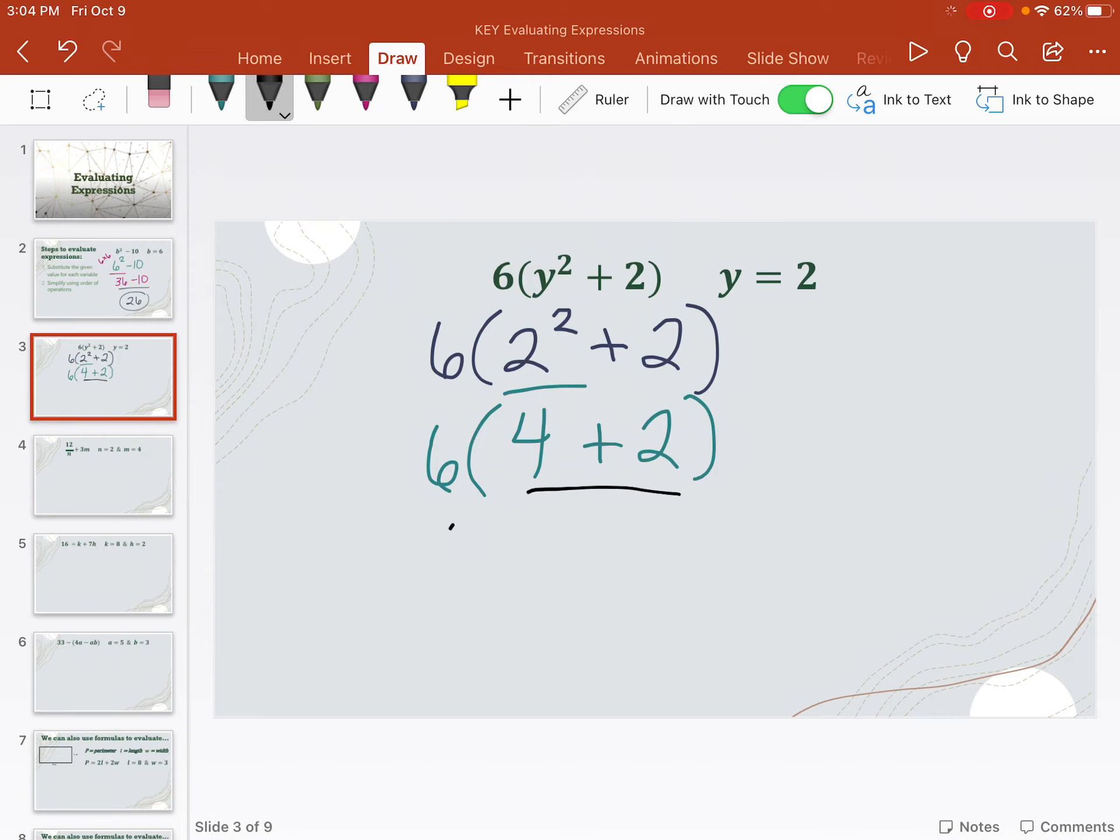So now I'm going to do the 4 plus 2, which gives me 6. And I'm leaving it in parentheses right now, mostly because I don't know what operation this is. Remember, if a number is right next to parentheses, that means to multiply. So this is really 6 times 6, which is 36. And that's our answer.